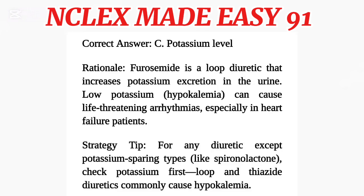Correct answer: C. Potassium level. Rationale: Furosemide is a loop diuretic that increases potassium excretion in the urine. Low potassium — hypokalemia — can cause life-threatening arrhythmias, especially in heart failure patients. Strategy tip: For any diuretic except potassium-sparing types, like spironolactone, check potassium first. Loop and thiazide diuretics commonly cause hypokalemia.